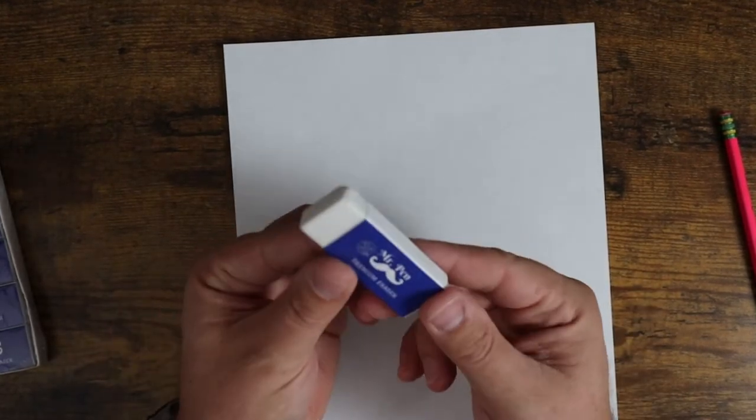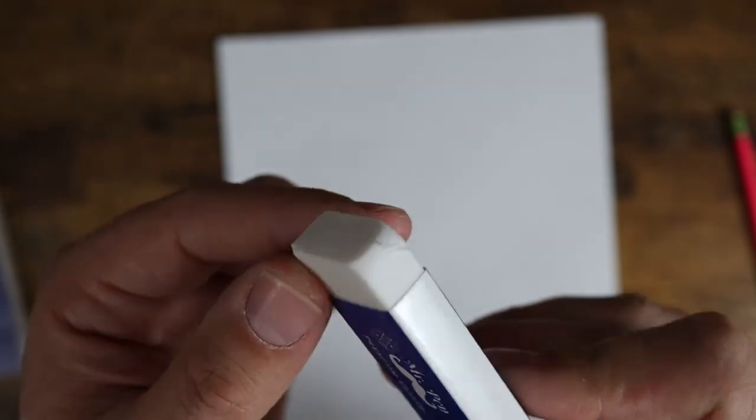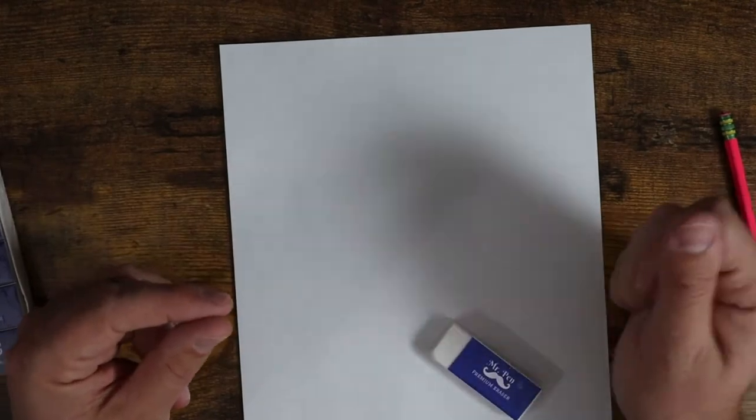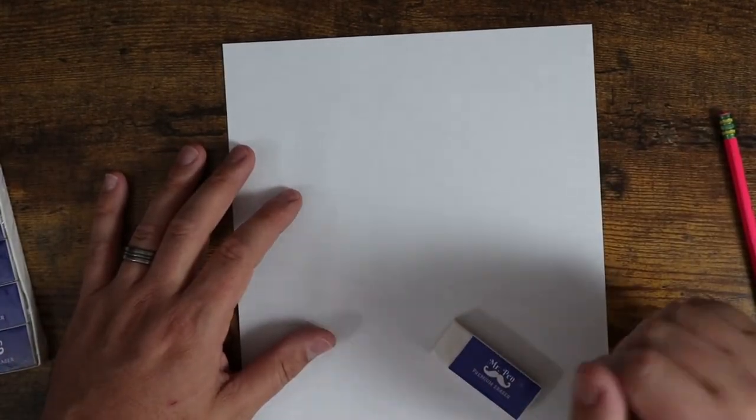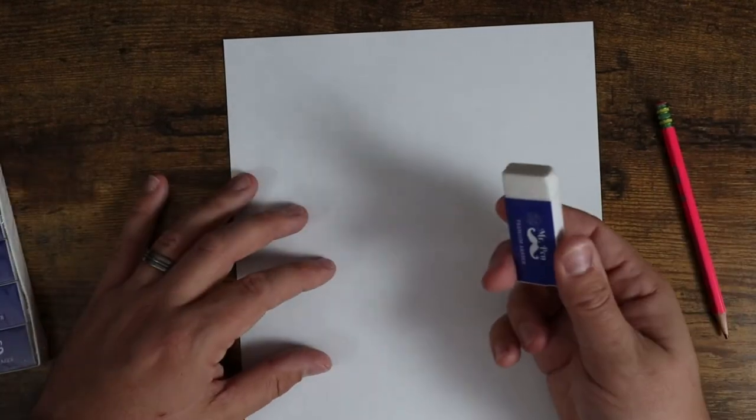They tend to wear out fairly quickly because of the material. You can see that right there, I've already got a rounded edge. They don't last the longest, but they just do a significantly better job than those cheaper erasers that just smear the lead all around and make a mess. These actually remove it.